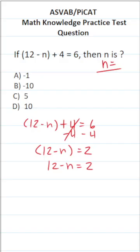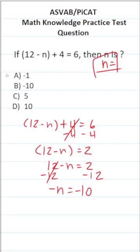To get negative n by itself, we're going to subtract 12 from both sides. In doing so, this crosses out, leaving you with negative n on this side. 2 minus 12 is negative 10. We want to solve for n, not negative n.